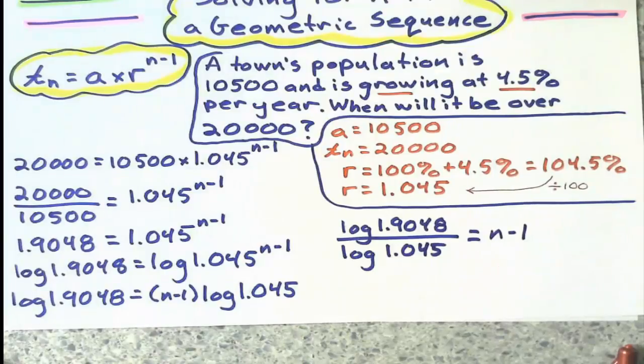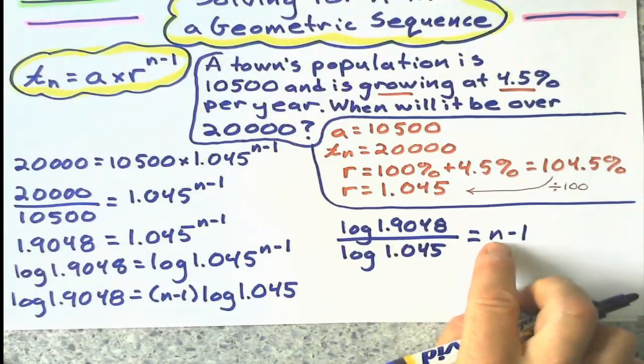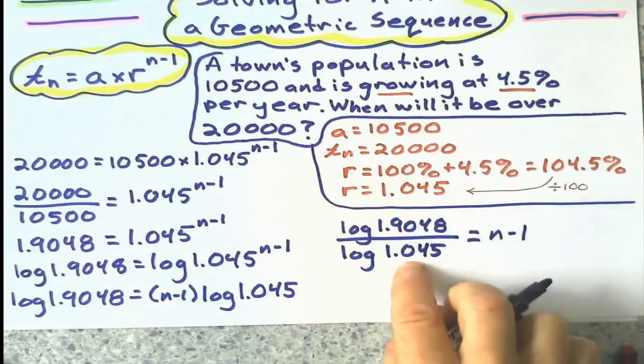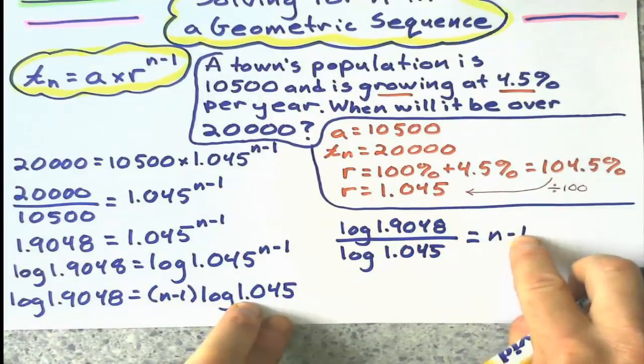So you can see that to solve for n, I'm going to do this log divided by this log, and then finally add 1 to the other side.